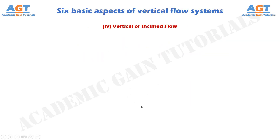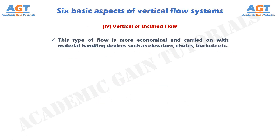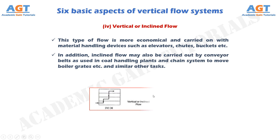Number 4: Vertical or inclined flow. This type of flow is more economical and carried on with material handling devices such as elevators, chutes, and buckets, as we can see in these figures. In addition, inclined flow may also be carried out by conveyor belts as used in coal handling plants, and chain systems to move boiler grates and similar other tasks.